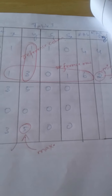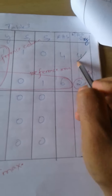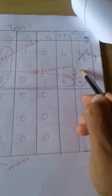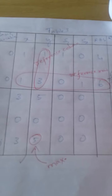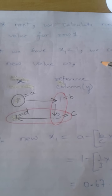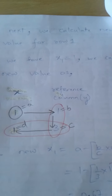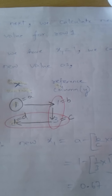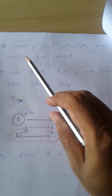We are selecting the second row because 2 is the minimum — obtained from 4 divided by 1 equals 4 and 6 divided by 3 equals 2. Since 2 is the minimum, we select the second row. This is called the reference row, and the corresponding column is called the reference column. Next, we calculate new values for row 1, as we did in the previous problem.